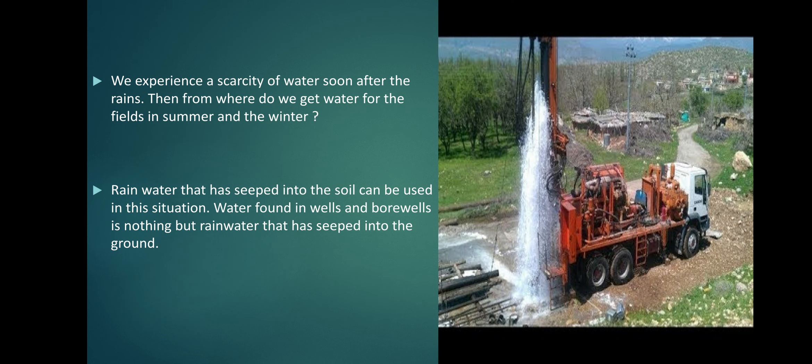We experience a scarcity of water soon after the rains. Then from where do we get water for the fields in summer and winter? Rain water that has seeped into the soil can be used in this situation. The water found in wells and bore wells is nothing but rain water that has seeped into the ground.